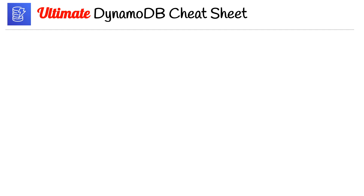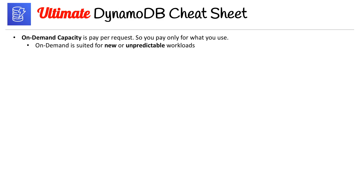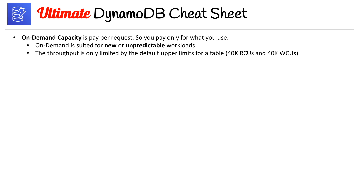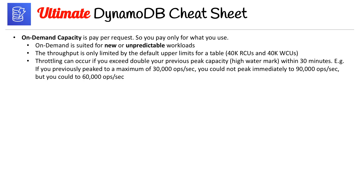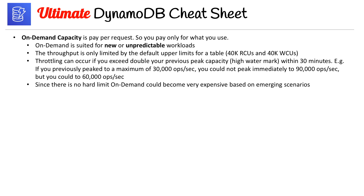On page six, talking about on-demand capacity — this is pay per request, you only pay for what you use. On-demand is suited for new or unpredictable workloads. The throughput is only limited by the default upper limit of the tables: 40,000 RCUs and 40,000 WCUs. Throttling can occur if you exceed double your previous peak capacity — the high watermark within 30 minutes. For example, if you previously peaked at 30,000 ops per second, you could not immediately peak at 90,000, but you could at 60,000.